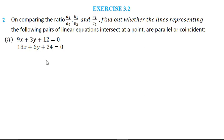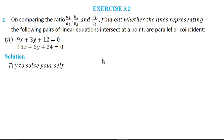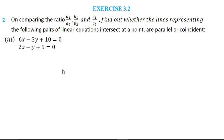For the second sub-question, you can find the ratios and check whether lines are intersecting, parallel, or coincident. Here 9/18 = 1/2, 3/6 = 1/2, and 12/24 = 1/2. So a1/a2 = b1/b2 = c1/c2, meaning the lines are coincident. For the third sub-question, 6/2 = 3, −3/1 = 3, but 10/9 ≠ 3, so a1/a2 = b1/b2 but not equal to c1/c2, meaning the lines are parallel.